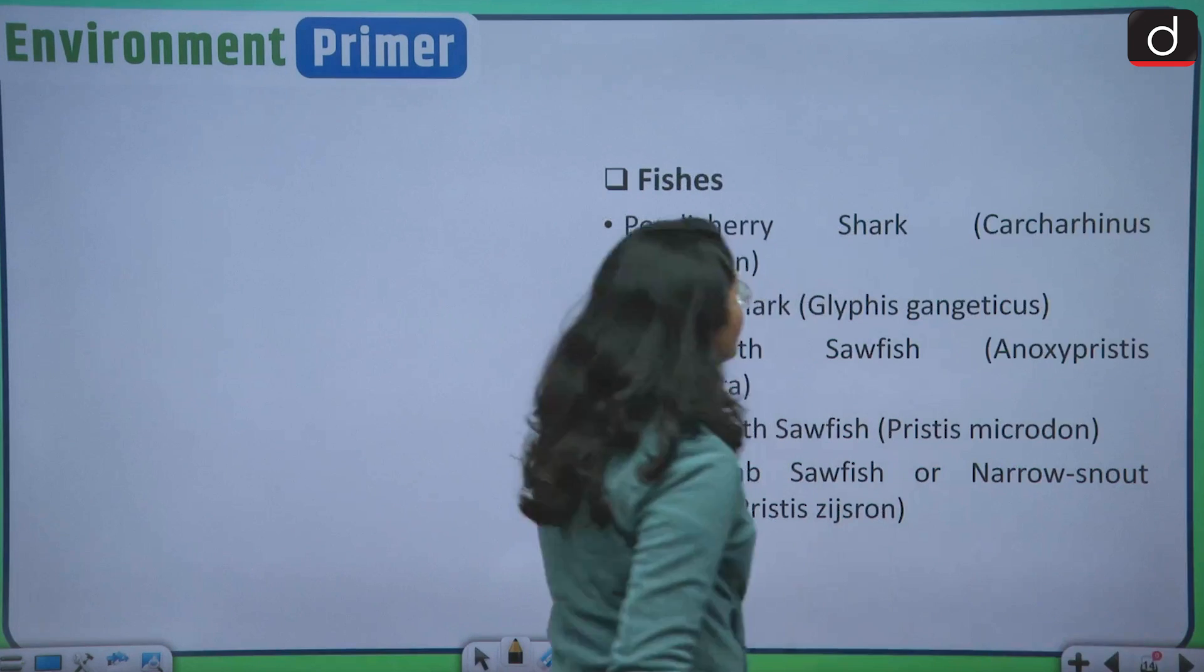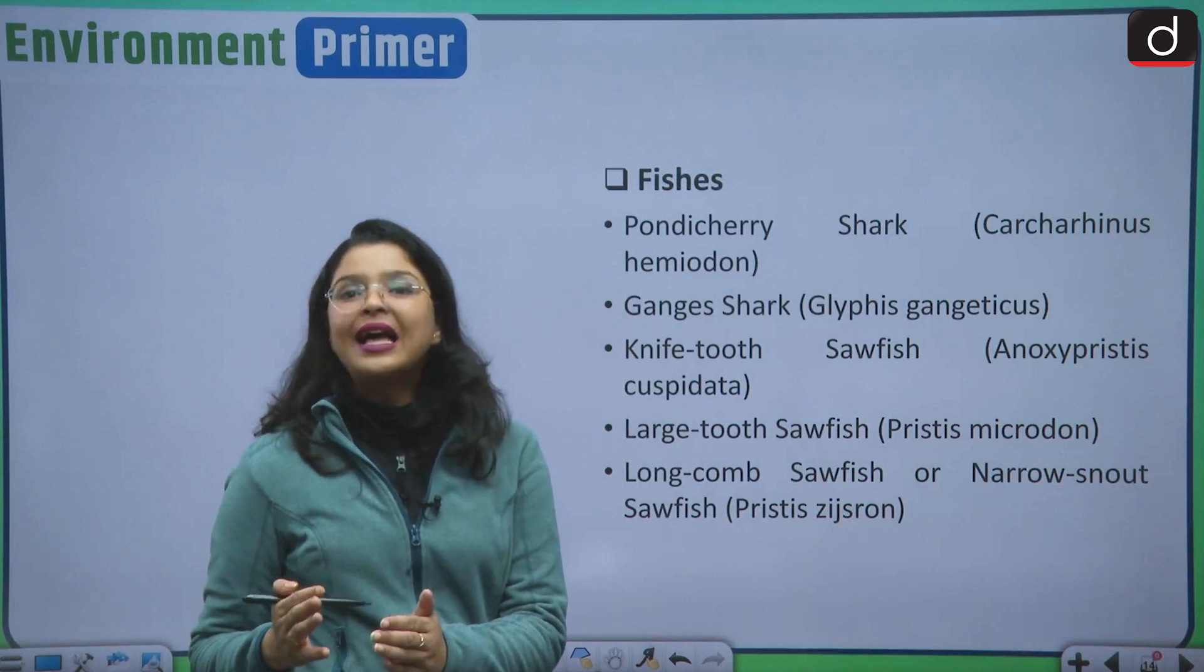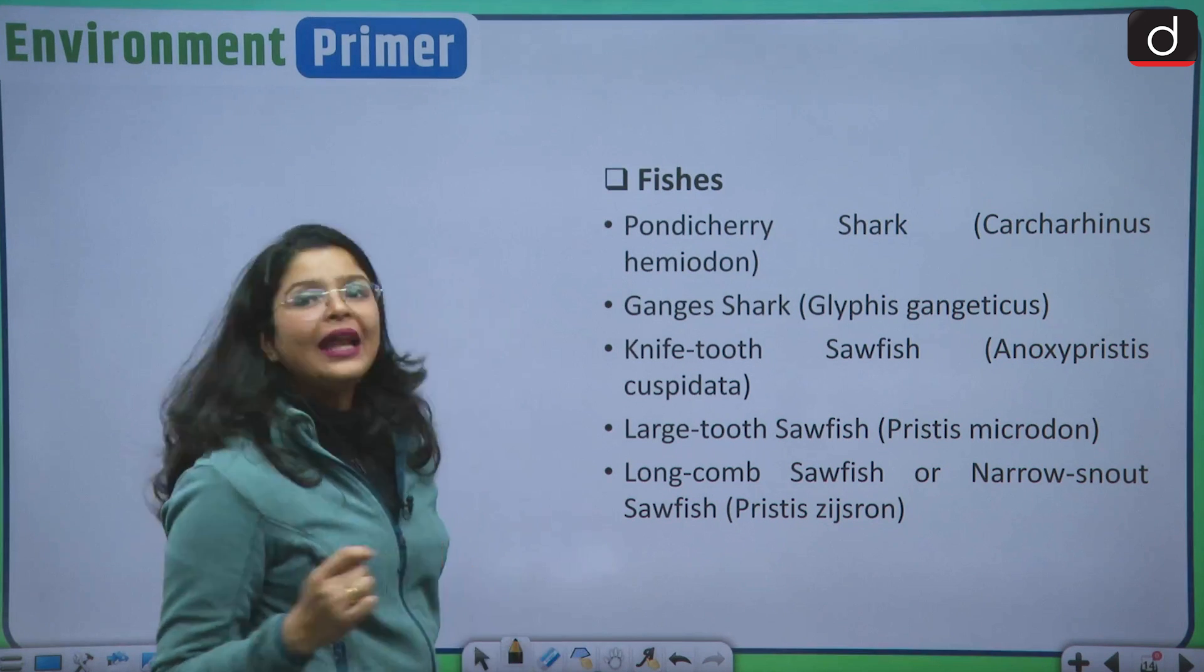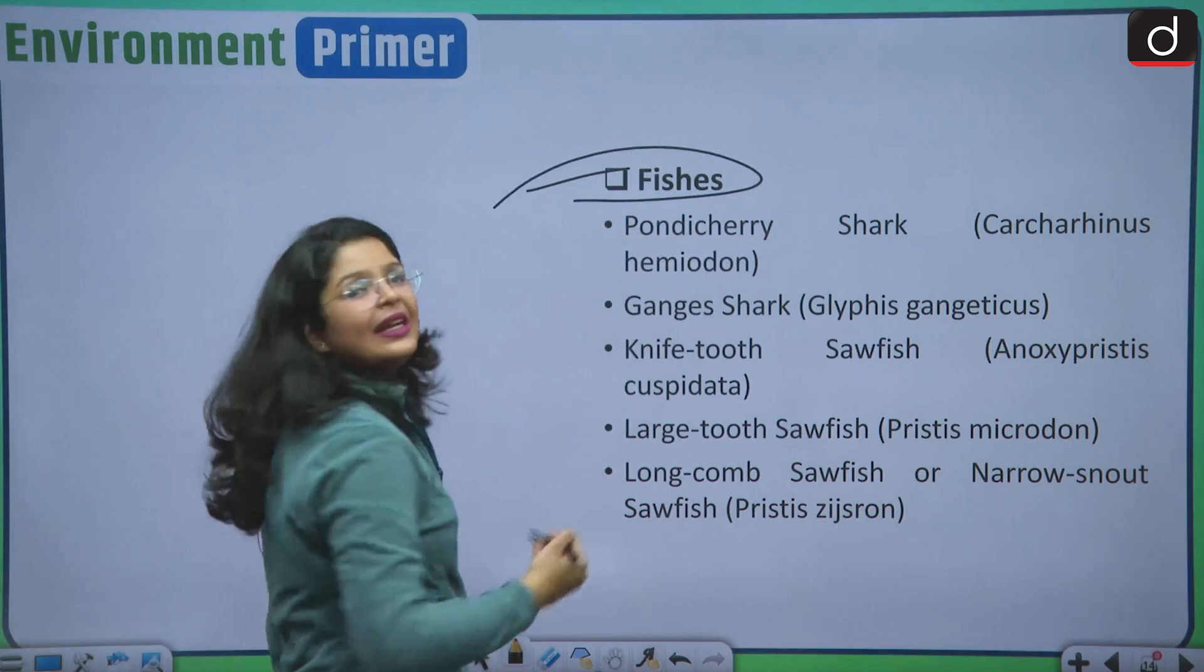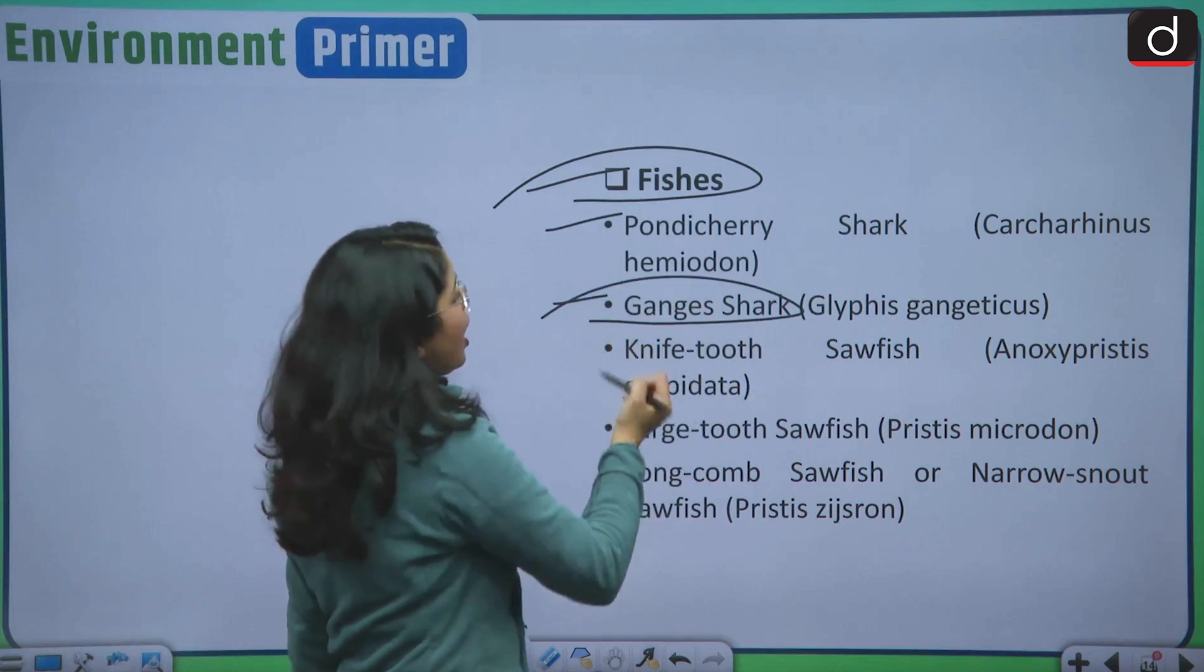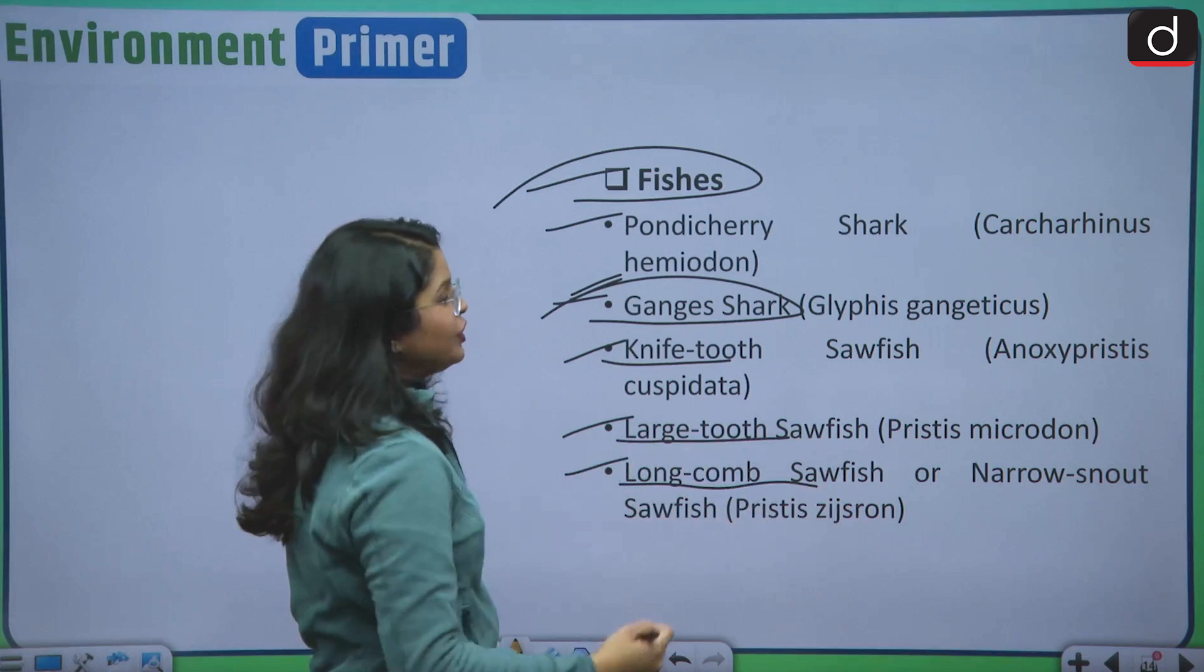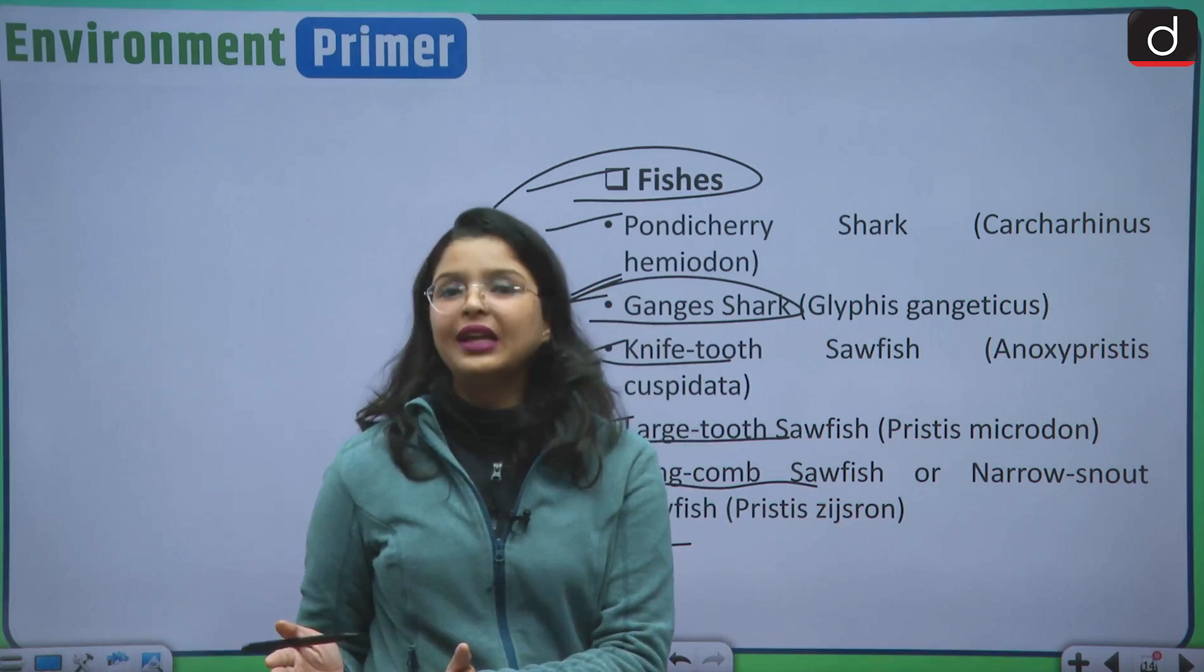Moving forward, not only the mammals and the birds. I was talking about this year, IUCN updated list has determined that yes, the global freshwater fish species are also very critically endangered and are on the verge of extinction. If we talk about the fishes in India that are critically endangered, they include the Pondicherry shark, Ganges shark, very, very important, knife-toothed sawfish, large-toothed sawfish and long-comb sawfish or narrow-snout sawfish. All of these fishes are also critically endangered in India.